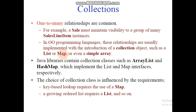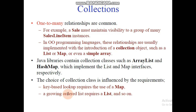A collection object can be a list, map, or array. Java libraries contain collection classes such as ArrayList and HashMap, which are implemented with list and map interfaces respectively. The choice of collection class is influenced by requirements: key-based lookup requires the use of a map; a growing ordered list requires a list, and so on.